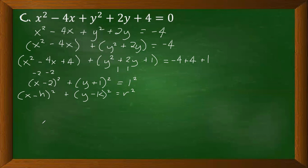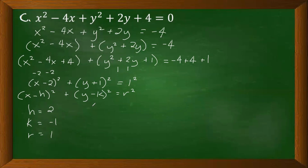We now have the equation in standard form. Recall the standard form is (x minus h) squared plus (y minus k) squared equals r squared. From our result, h is 2, k is negative 1, and the radius is 1.